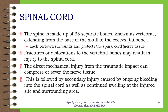The spine is made up of 33 separate bones, known as vertebrae, extending from the base of the skull to the coccyx, or tailbone. Each vertebra surrounds and protects the spinal cord — nerve tissue. Fractures or dislocations to the vertebral bones may result in injury to the spinal cord.